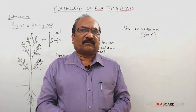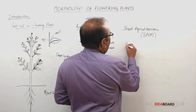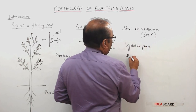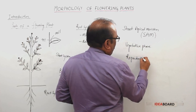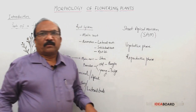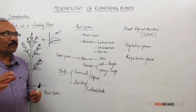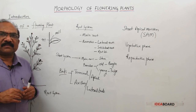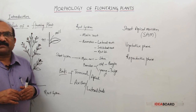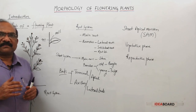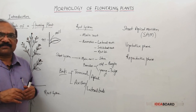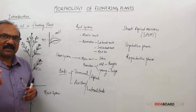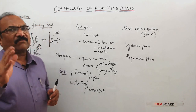In a flowering plant, you will find two phases. One is the vegetative phase. During the vegetative phase, the plant will show vegetative growth — that is, growth of vegetative organs: root, stem, and leaves. During the reproductive phase, the plant produces flowers. After the completion of fertilization, flowers become fruits, and those fruits will contain seeds. Flower, fruit, and seeds are reproductive organs, formed during the reproductive phase.